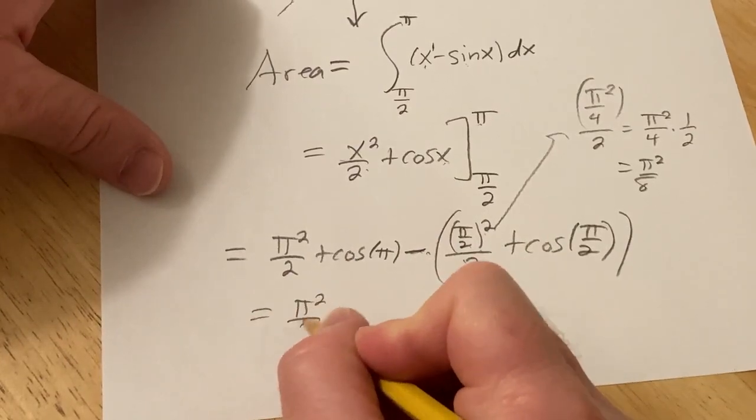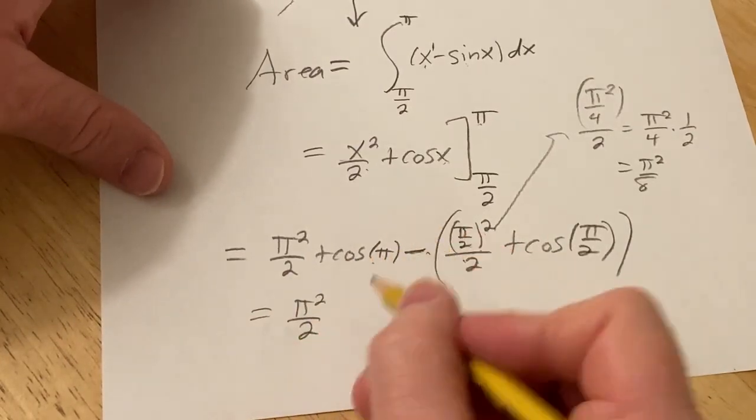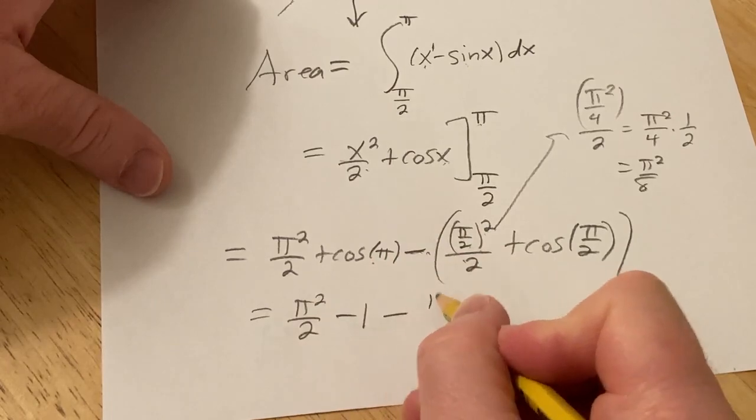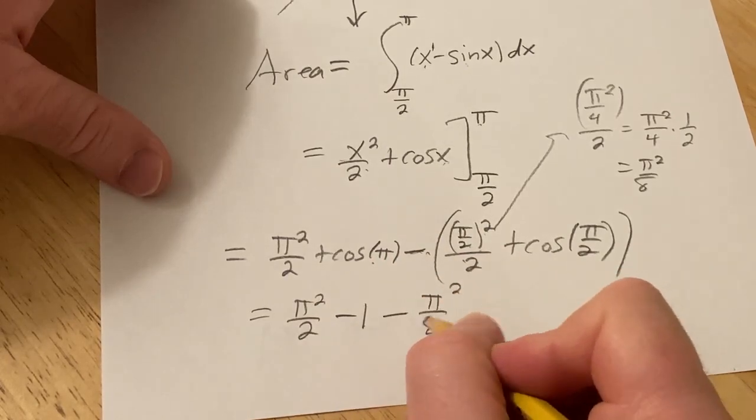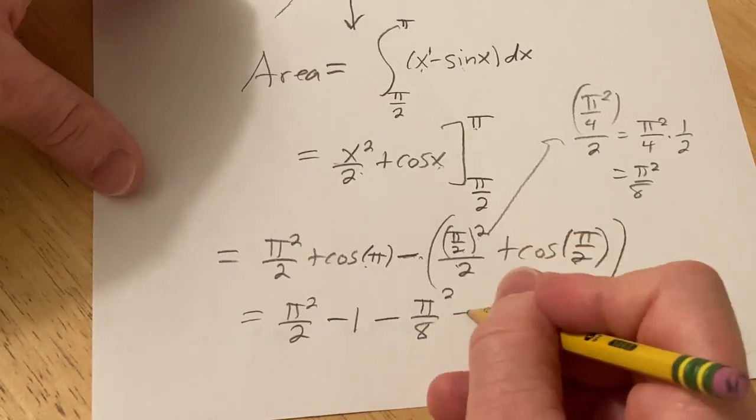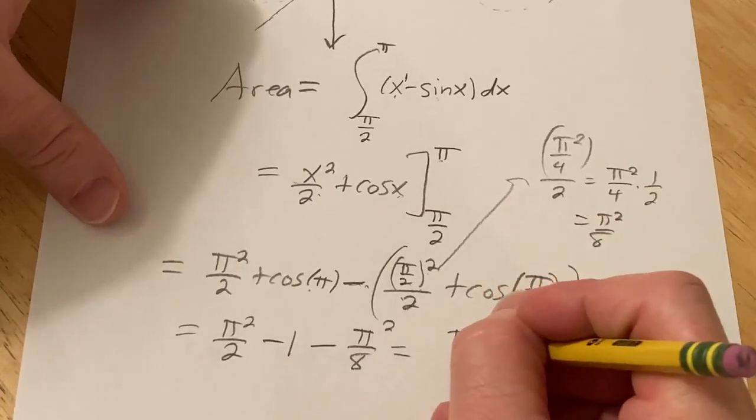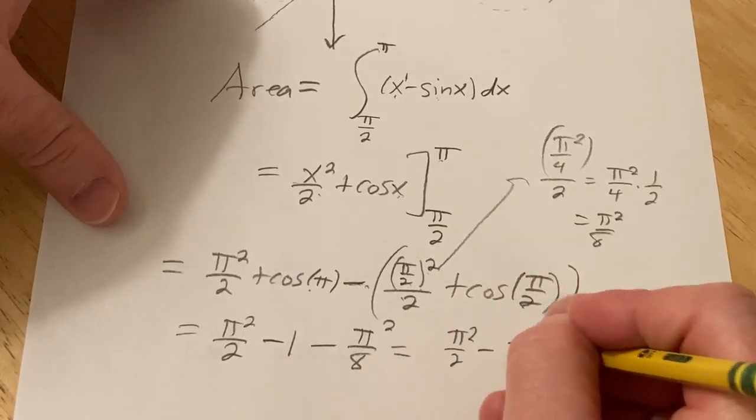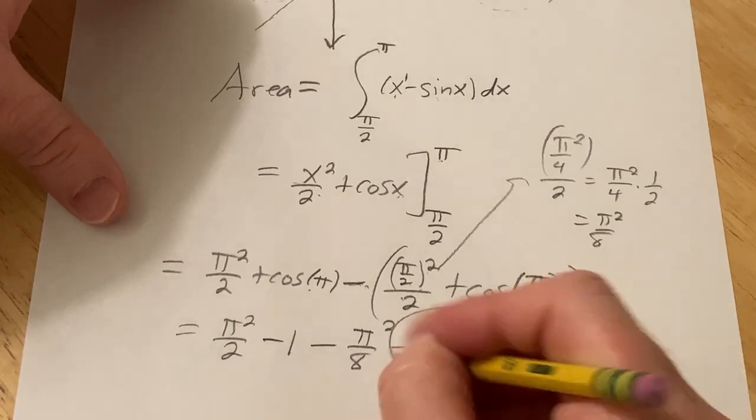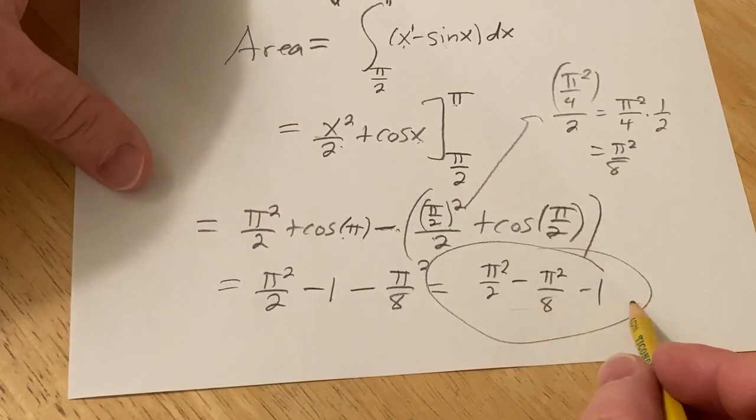So this is pi squared over 2. Cosine of pi is negative 1 minus pi squared over 8. Cosine of pi over 2 is 0. So we end up with pi squared over 2 minus pi squared over 8 minus 1. You could leave it like that, or you could combine these if you really wanted to.